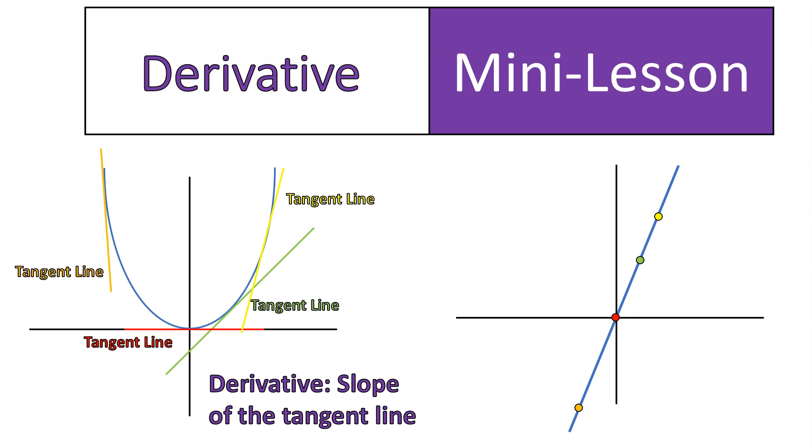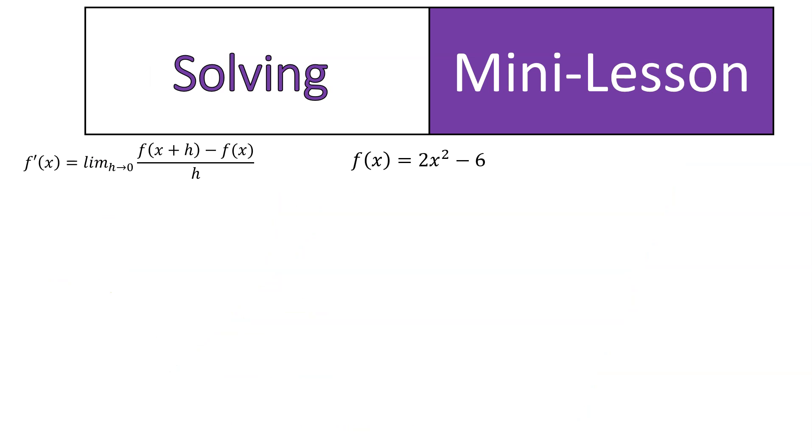So a derivative is going to be a function. In this case, it's a line, and that's basically what we're calculating. Here, this derivative will tell you what is the slope at any point along this function, the slope of the tangent. All right, now let's talk about actually solving it.